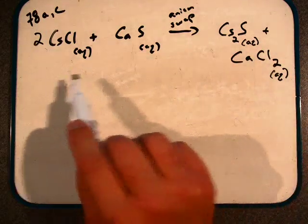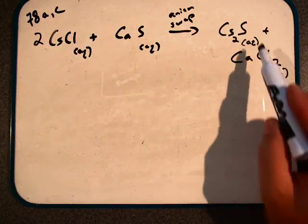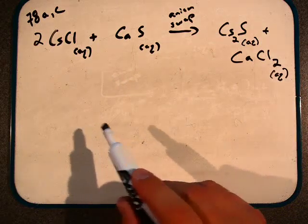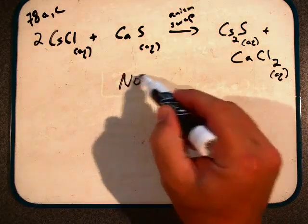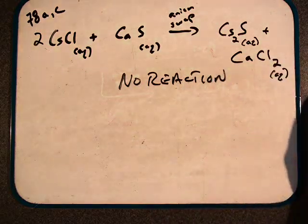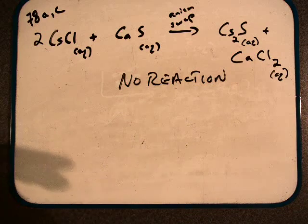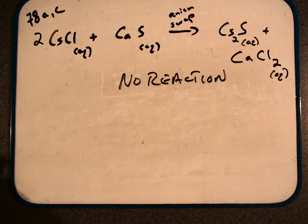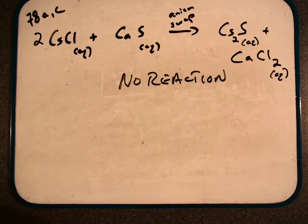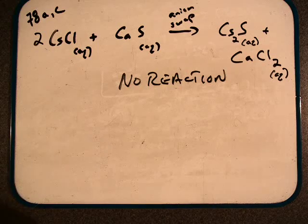We start with two aqueous species reacting with one another to form two new products, but both of those products are aqueous. As a result, we have no reaction. All of these ions are simply spectators staying in solution. No chemical reactivity, no precipitate is observed. Thus, no reaction.